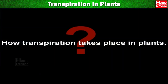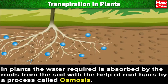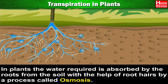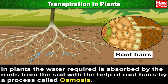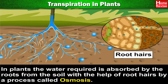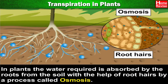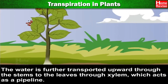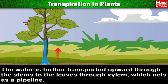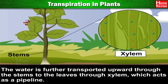Let's learn about how transpiration takes place in plants. The water required is absorbed by the roots from the soil with the help of root hairs by a process called osmosis. The water is further transported upwards through the stems to the leaves through xylem, which acts as a pipeline.